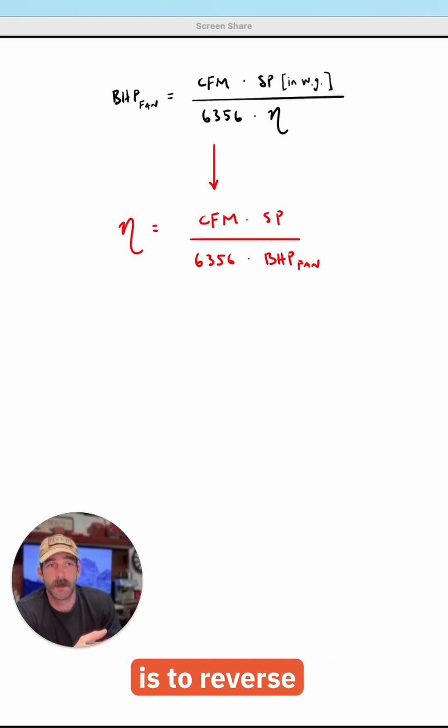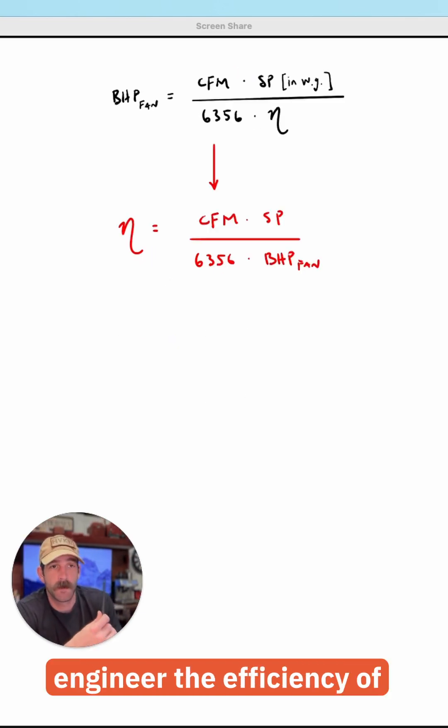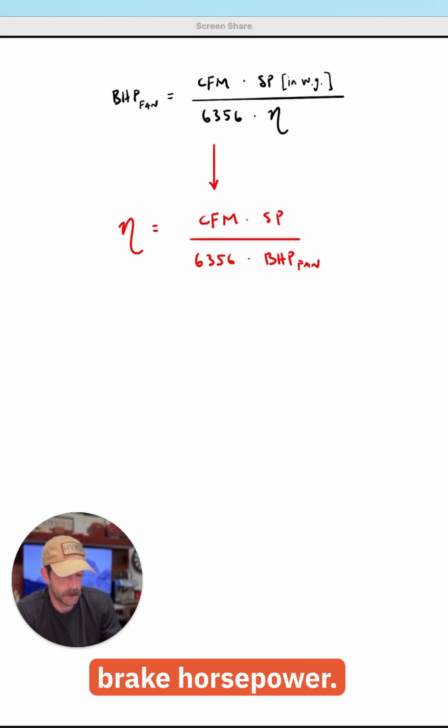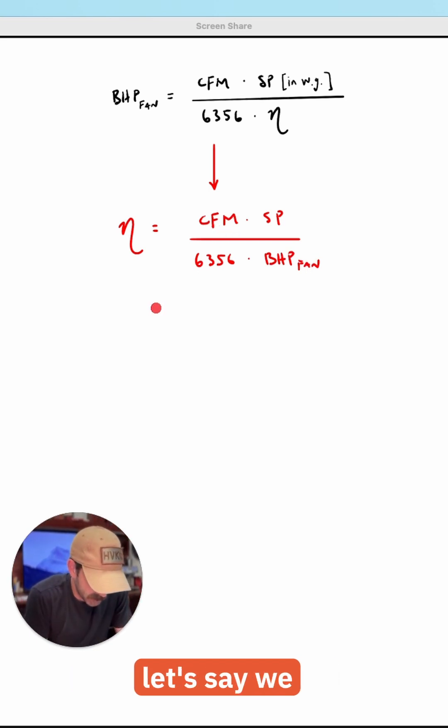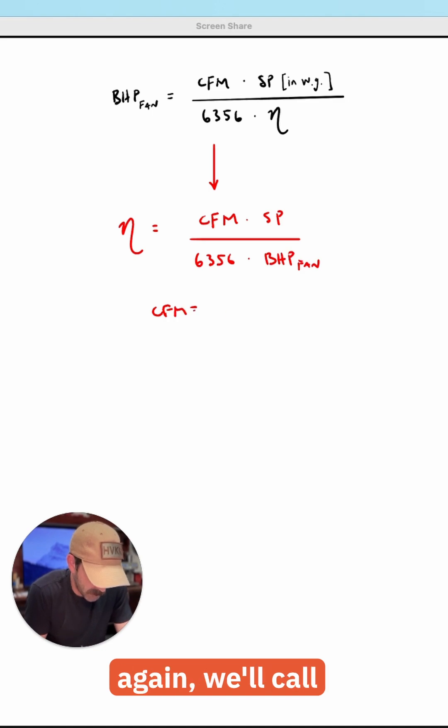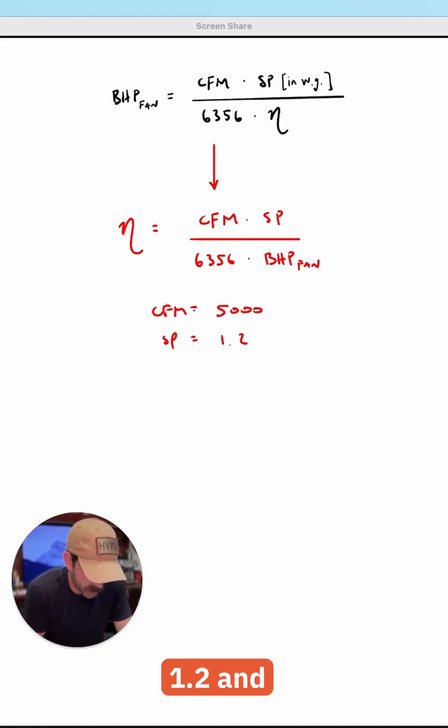Another way to use this equation is to reverse engineer the efficiency of the fan if you already know the brake horsepower. So here I've rearranged the equation to solve for efficiency. And let's say we know the CFM, again, we'll call it 5,000. The static pressure is 1.2.